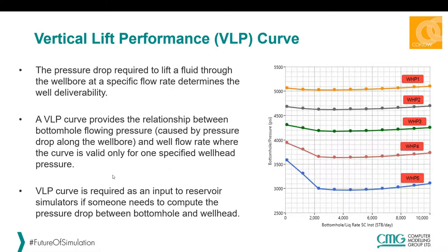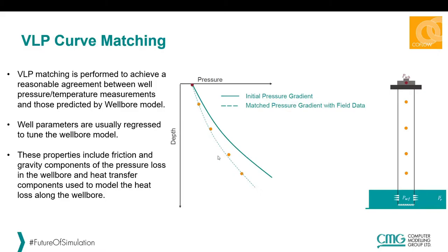The VLP curve is required as an input to the reservoir simulator if the user would like to calculate the pressure drop between the bottom hole and the wellhead nodes inside the well. VLP curve matching is performed to achieve reasonable agreement between measurements such as pressure and temperature inside the well and those predicted by the wellbore model. The well parameters usually regressed in the wellbore model include friction and gravity components of the pressure loss and the heat transfer components used to model heat loss along the wellbore.